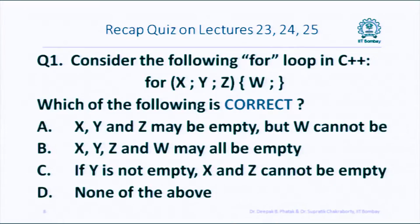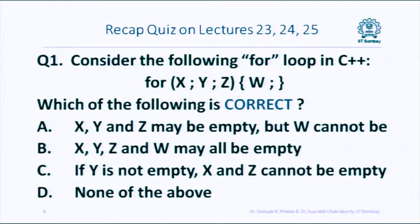We are asking for the correct ones. Option A is: x, y, and z may be empty but w cannot be. B is: all of them may be empty. C says: if y is not empty then x and z cannot be empty. And D is: none of the above. If you have seen the video lectures, it should be very straightforward. We will give you a minute and then move to the next question.